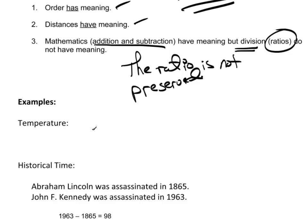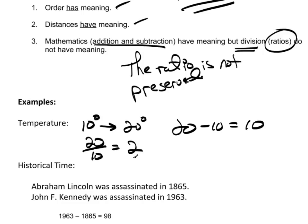As an example, temperature. Let's just say that it is 10 degrees outside. And you step into a building and that building is at 20 degrees. Well, 20 minus 10 equals 10. Sure enough, there was a 10 degree increment in the heat. So that makes sense.